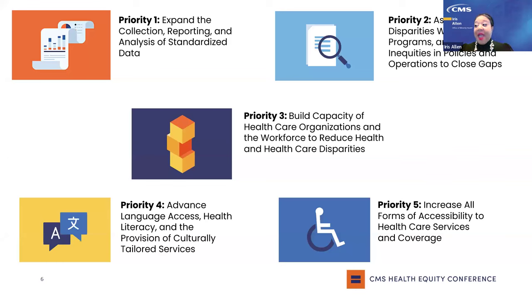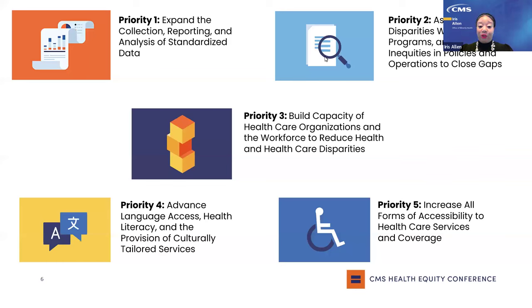Priority two: assessing causes of disparities in CMS programs and inequities in policies. Examples include proposals related to CMS's programs and initiatives, models and demonstrations related to social risk factors, payment and value-based purchasing programs, and rural access to care. Priority three: building capacity of health care organizations and the workforce to reduce health disparities. Examples include projects that explore the expansion of providers participating in value-based care, projects that address specialist care integration, behavioral, clinical, and social services, recruiting and retaining caregivers proficient in Medicaid threshold languages, building a more diverse behavioral health workforce, and innovative partnerships with community colleges and other workforce pipelines.